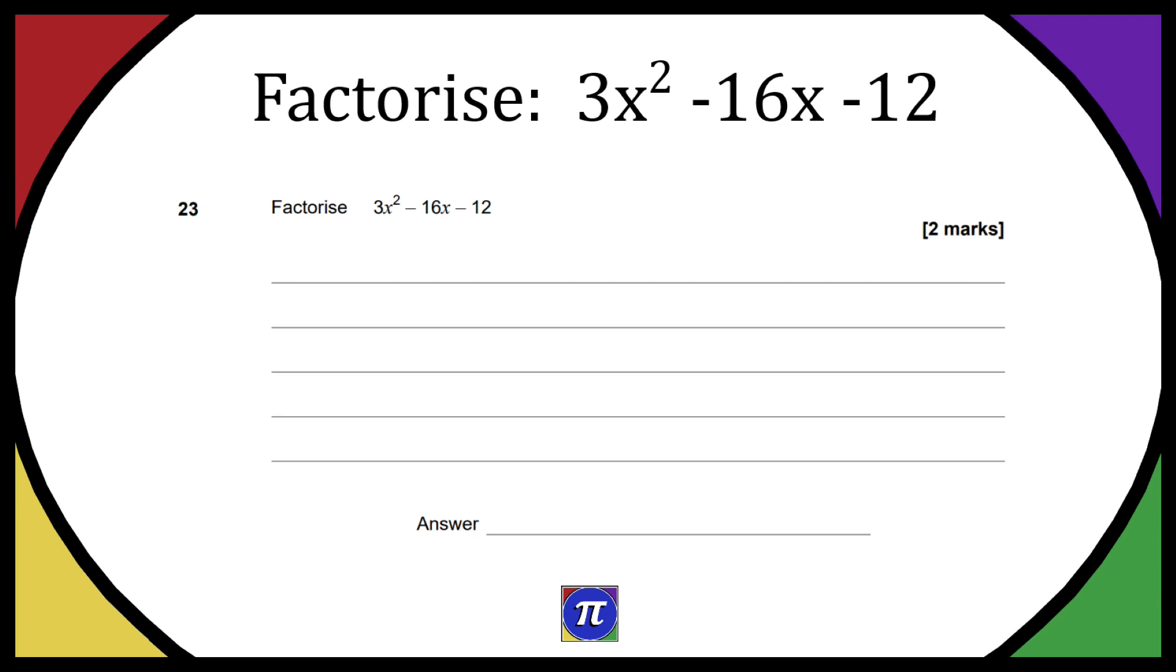We have question 23 from the past paper linked below. We need to factorize 3x² - 16x - 12, and it's a two-mark question. This is a slightly more complex factorization because we have a 3 in front of the x², but I'm going to show you how to work it out.